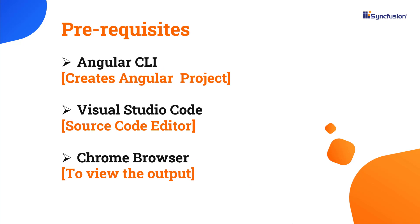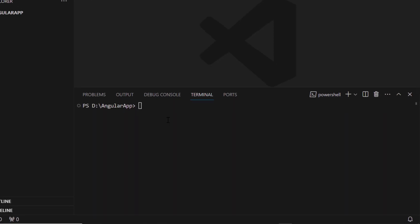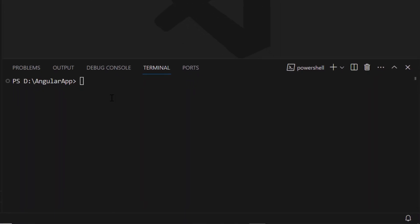Let me start the Angular application creation process by using the Angular CLI tool. Make sure you have installed the latest version of Node.js. First, open Visual Studio Code and install the Angular CLI using the npm install -g @angular/cli command.